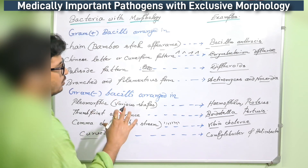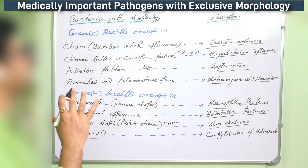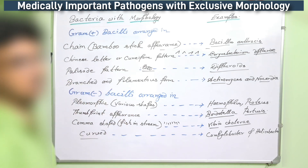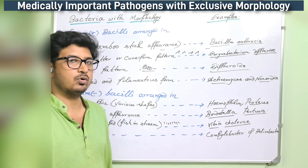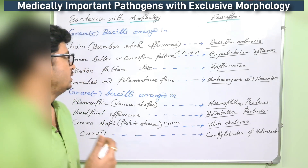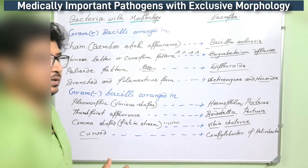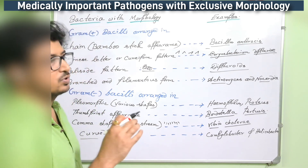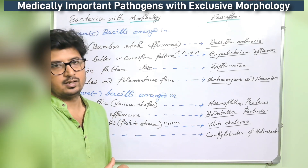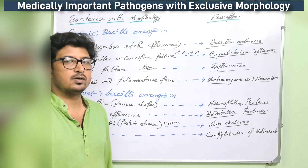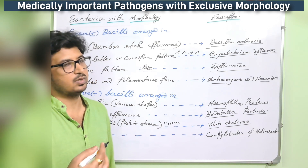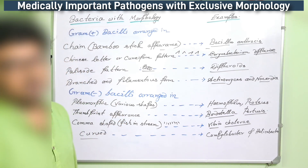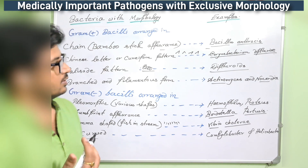These are very important morphological patterns for bacilli structures — both gram-positive and gram-negative bacilli. Now I will go to some special bacteria which cannot be classified under gram-positive or gram-negative patterns. These are bacteria that are separated not by gram-stain but by other means.